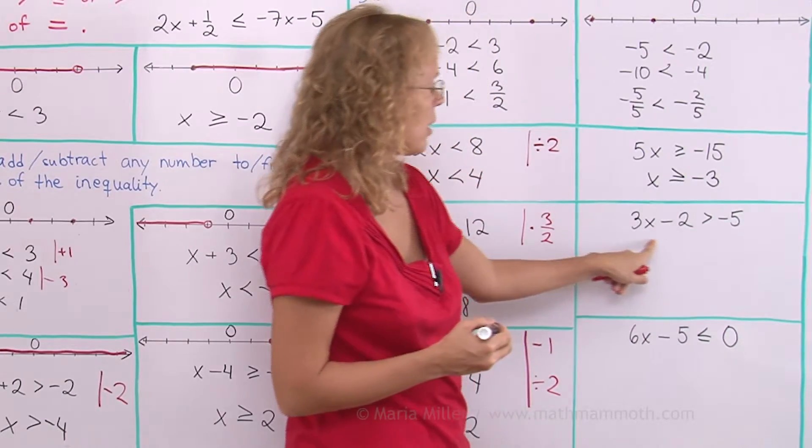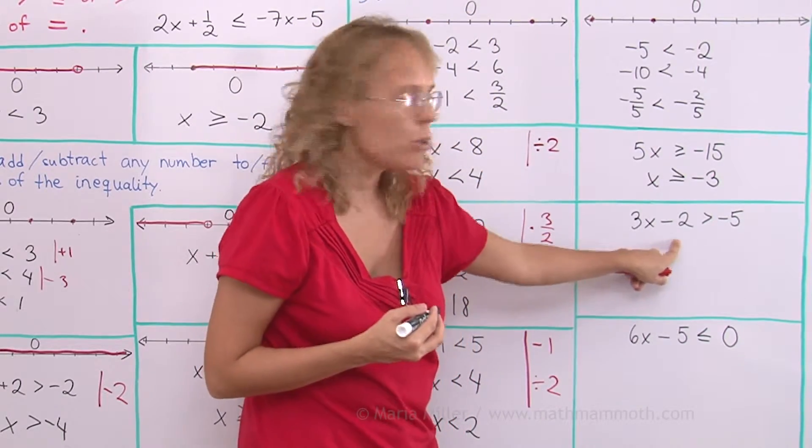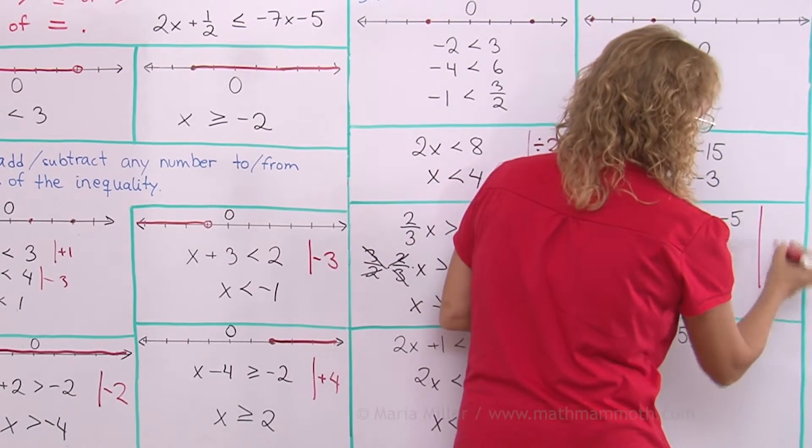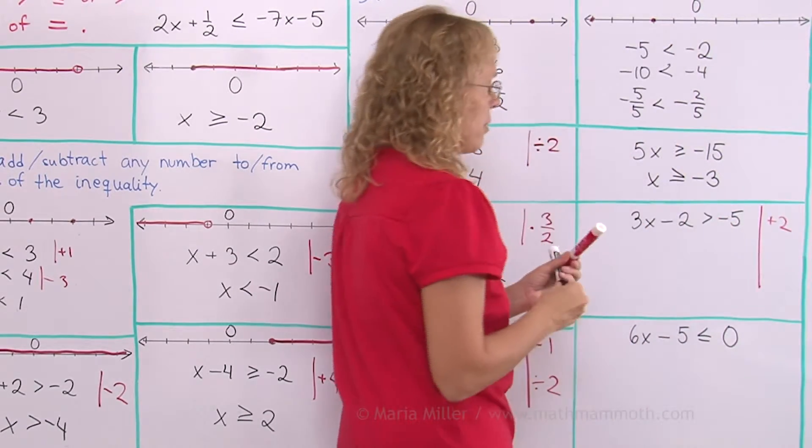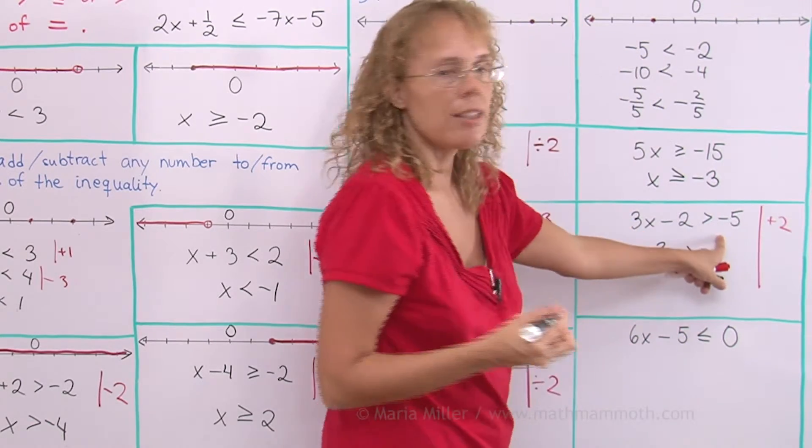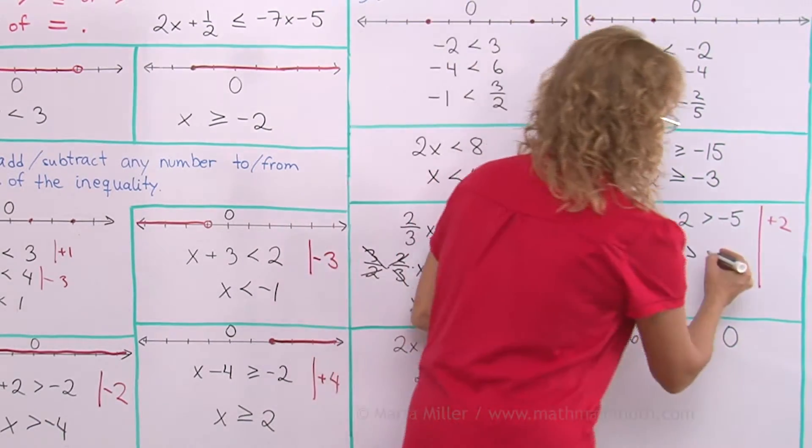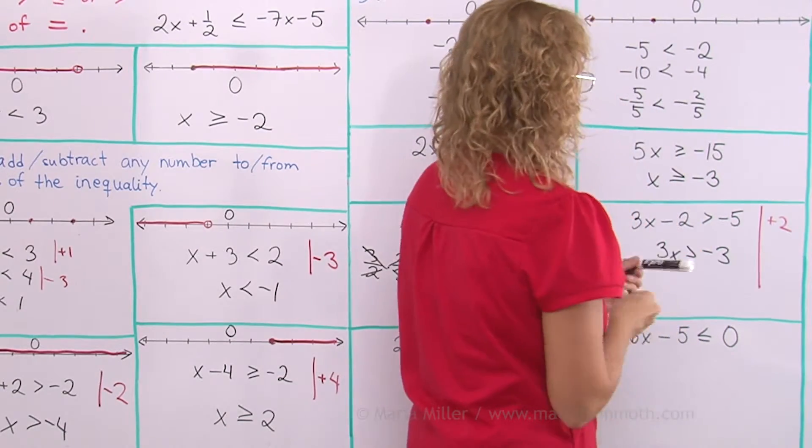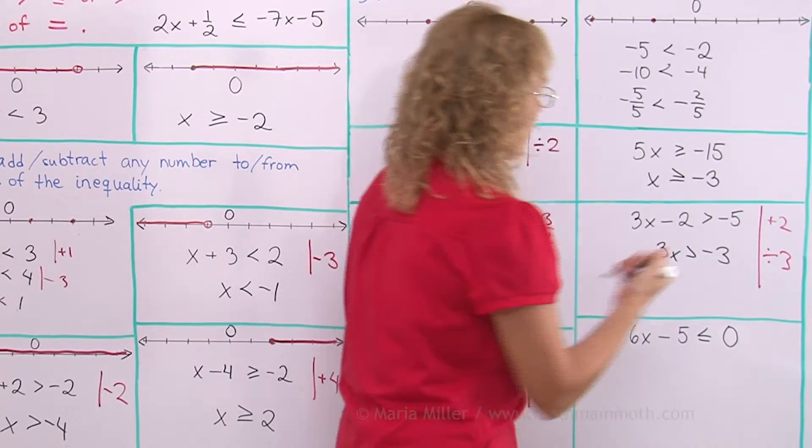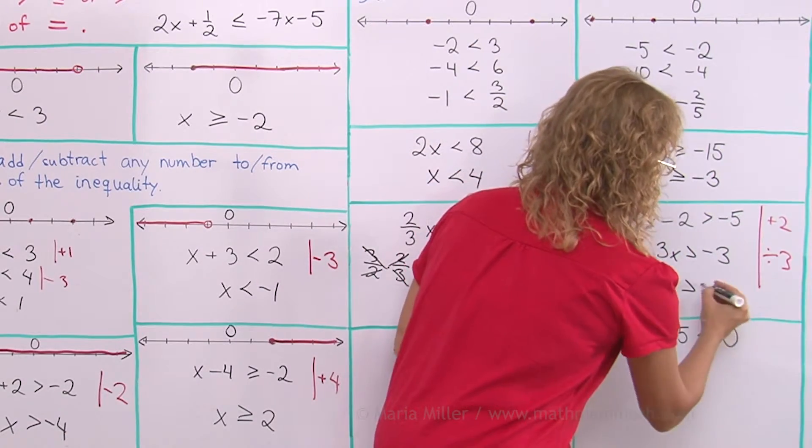This one, I want to get rid of this negative 2 here, or this minus 2. So I will add 2 to both sides as my first step. And then I have 3x. On this side, negative 5 plus 2 is negative 3. And now divide both sides by 3. So we get x is greater than negative 1.